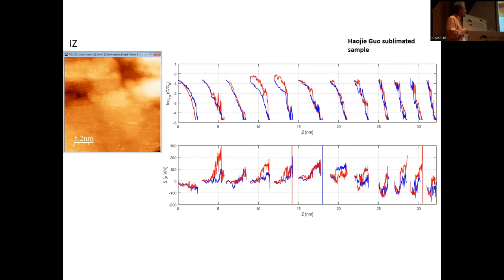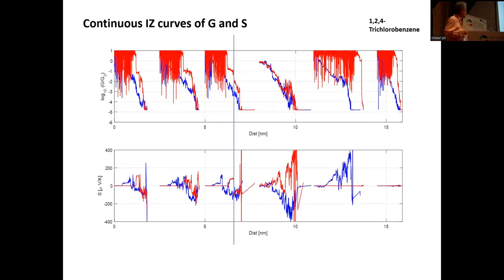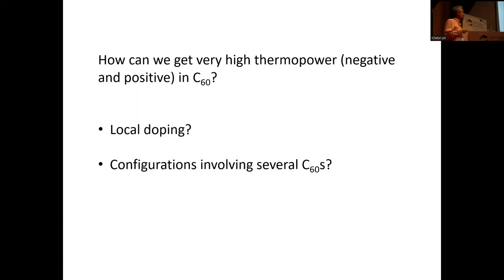In areas with more C60s in messier configurations, we see values higher than 200 microvolts per kelvin. In one remarkable trace, the Seebeck went to minus 300 on approach and then positive 400 on retraction — and reproduced in the next cycle before disappearing. These are the highest thermovoltage values measured in molecules, combined with relatively high conductance. This is likely due to local doping and configurations involving several C60s. We are currently exploring these configurations to understand what conditions produce such high values.